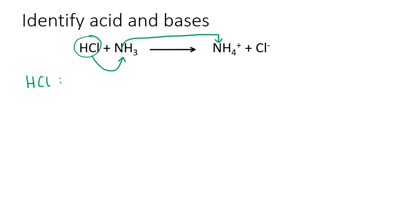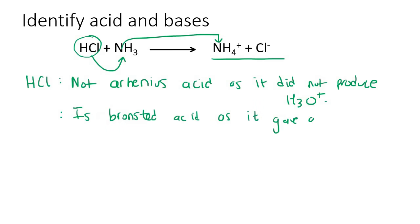But can you see that we are not producing any H3O+? So we will say not Arrhenius acid as it did not produce H3O+. However, it will be a Bronsted acid as it gave away a proton.